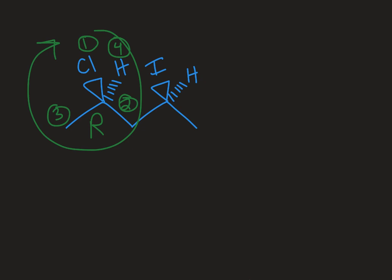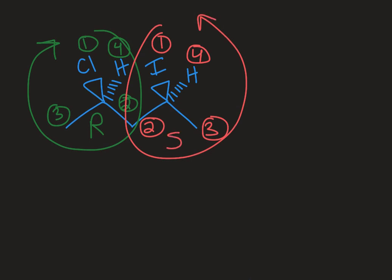On the right hand side carbon, the iodine is the highest priority group, the internal carbon is second, methyl is third, and the hydrogen is your lowest priority group. Going from one to two to three there you're going counterclockwise. So the absolute configuration there would be S.